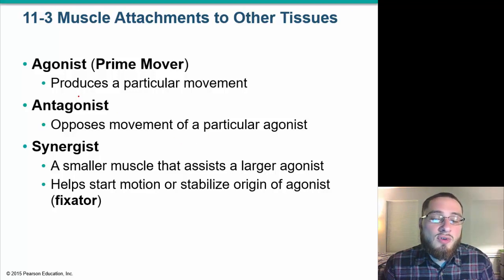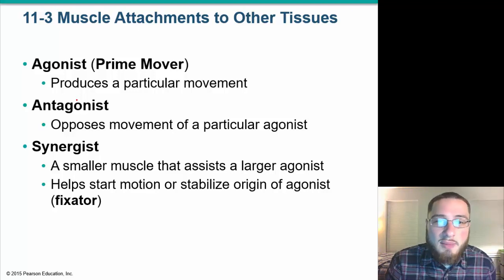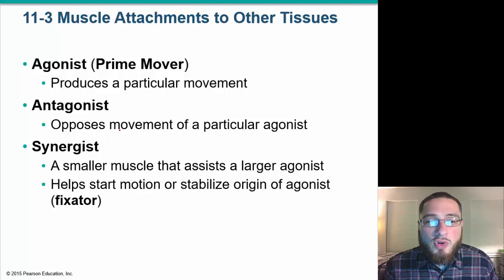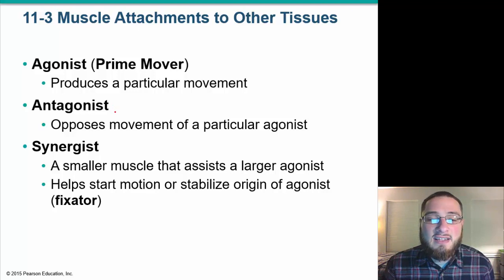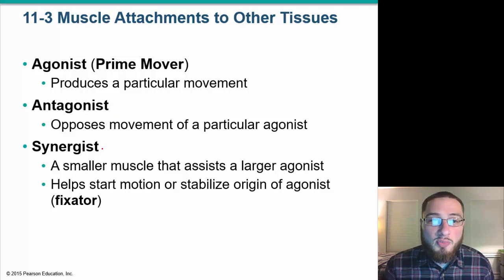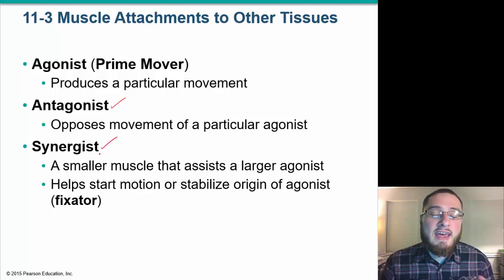When we talk about different muscles, we always talk about the type of movements they do. If they produce a specific movement, we call them prime movers. We're always talking about antagonists — you have the agonist, which is going to move in a specific way, and then you have an antagonist, which goes in the opposite way. You also have synergists, which help our agonists move the way we want.